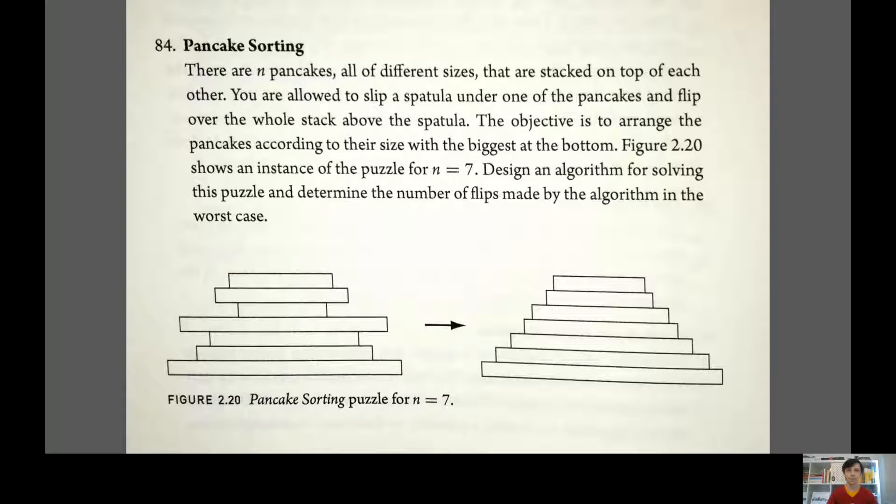So here's the problem. It should be on the screen now but I'll read it out anyway. There are n pancakes—assume n is a natural number, a whole number at least two—all of different sizes that are stacked on top of each other. You are allowed to slip a spatula under one of the pancakes and flip over the whole stack above the spatula.